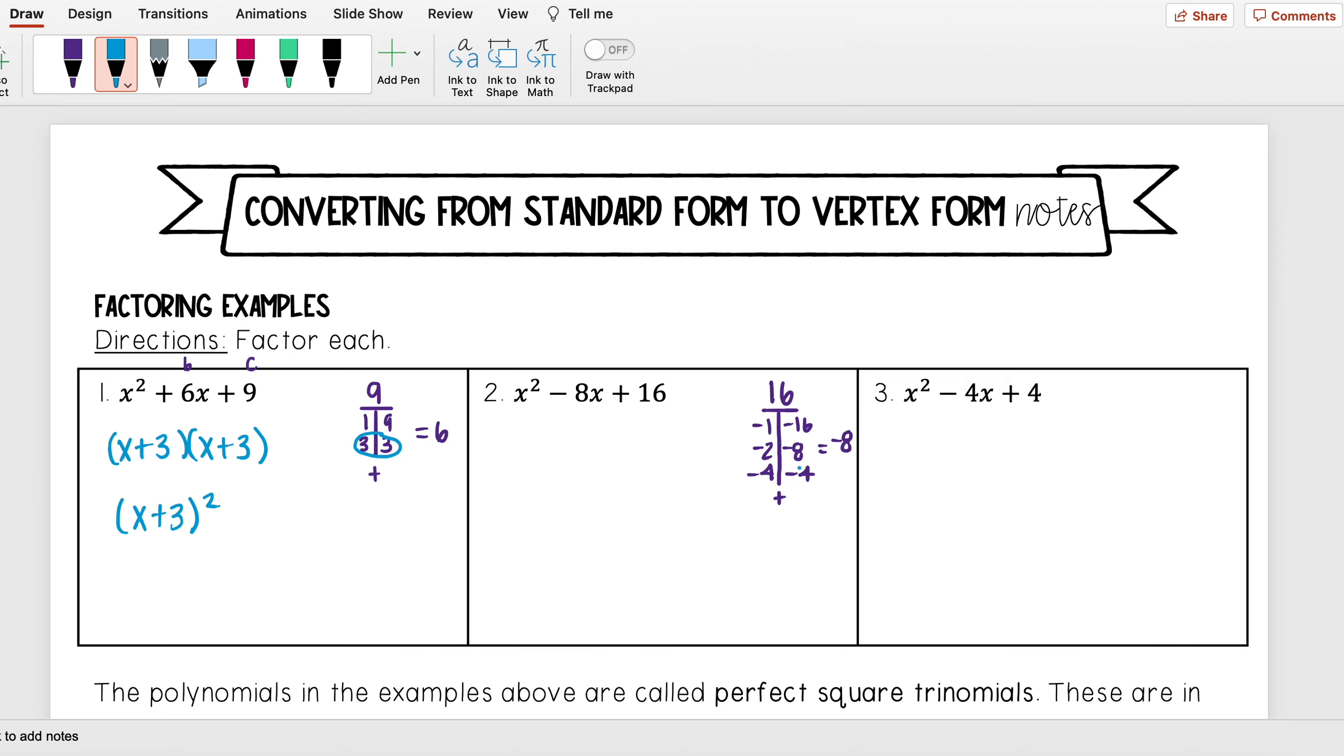And looking at these pairs and seeing which ones add up to negative 8, I see it's going to be the minus 4, minus 4. So writing this factored, it would be x minus 4 times x minus 4. And now, since I have the same thing written twice, it's x minus 4 times x minus 4, I can write that as x minus 4 squared.